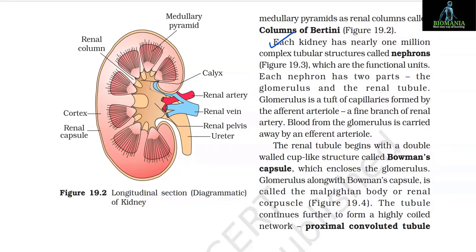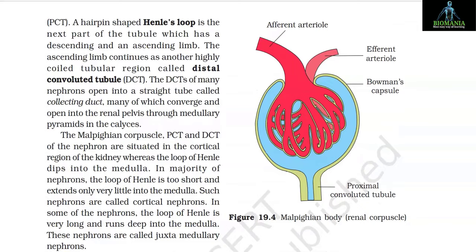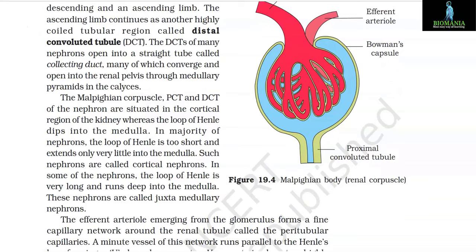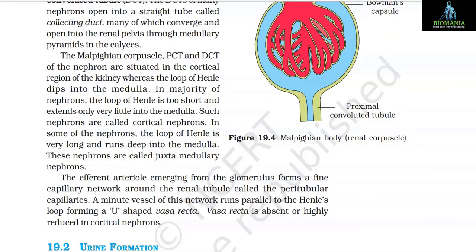The tubule continues further to form a highly coiled network called the proximal convoluted tubule (PCT). A hairpin-shaped Henle's loop is the next part, which has a descending and an ascending limb. The ascending limb continues as another highly coiled region called the distal convoluted tubule (DCT). The DCTs of many nephrons open into a straight tube called the collecting duct, many of which converge and open into the renal pelvis through medullary pyramids in the calyces.